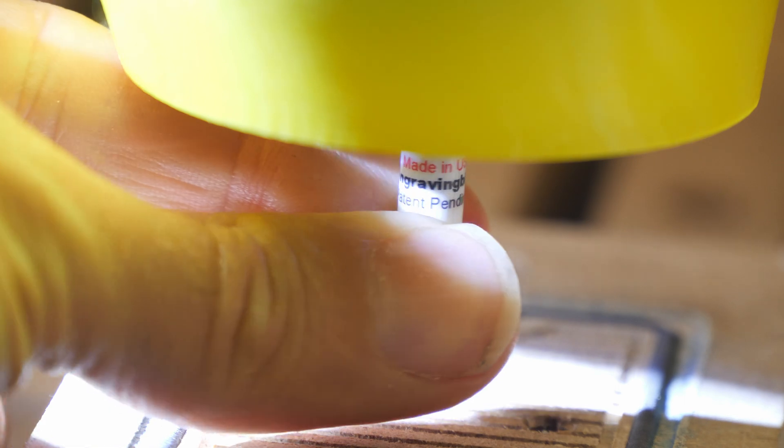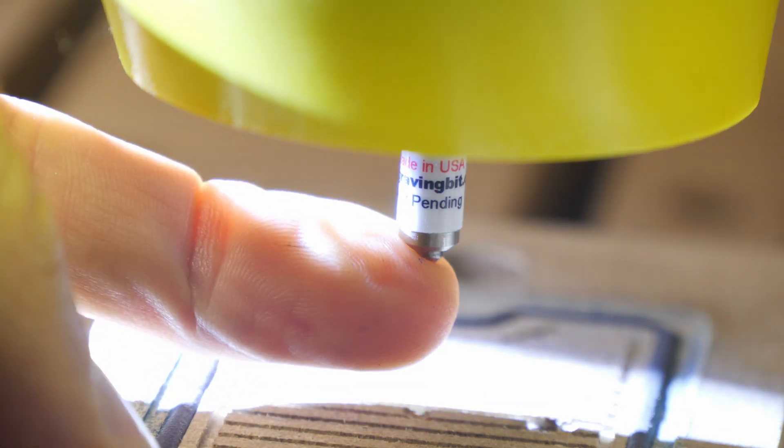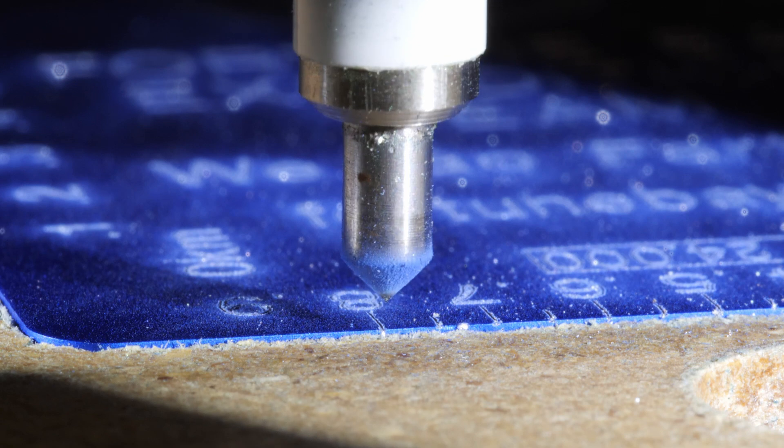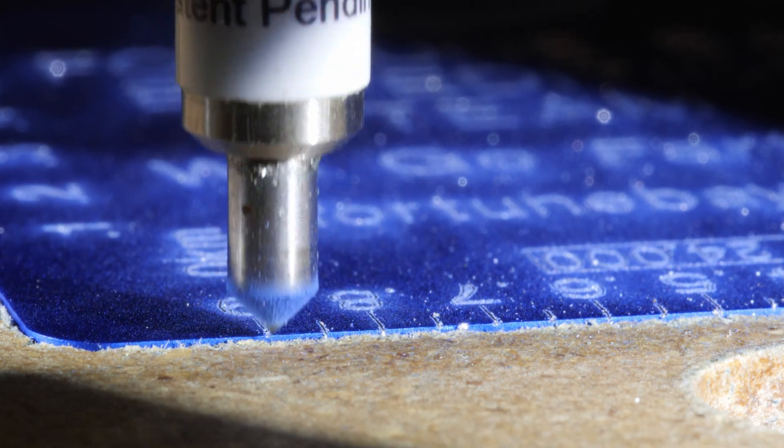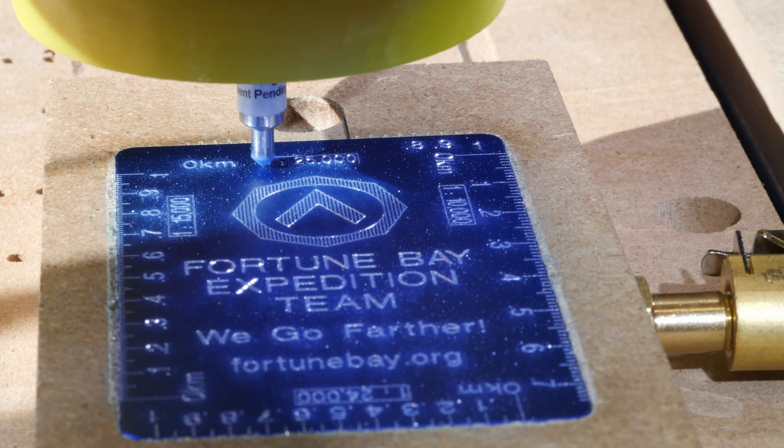It goes into the spindle much like any other router bit, but the spindle isn't turning. It's simply pressing the spring-loaded bit down into the surface of the aluminum and scratching this pattern in.